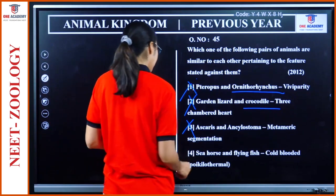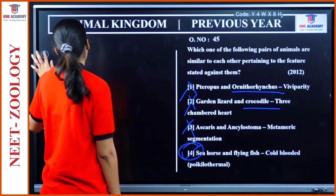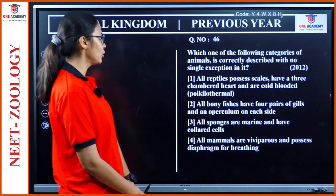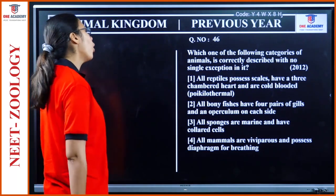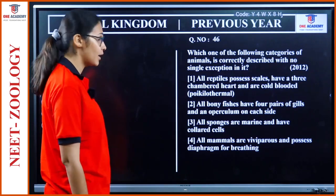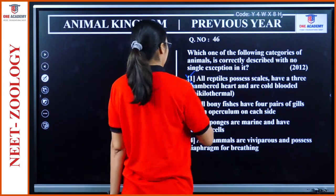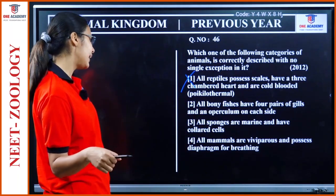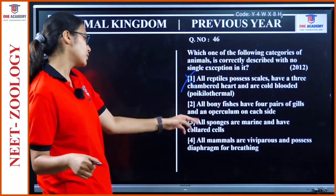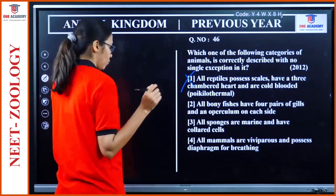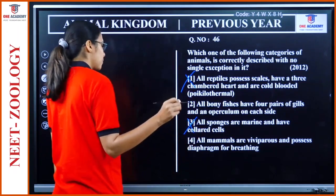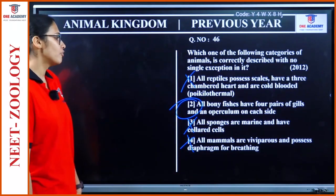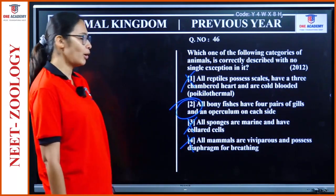Question 46: 'Which category is correctly described with no single exception?' All reptiles possess scales with three-chambered heart — exception is crocodile. All bony fishes have four pairs of gills and an operculum on each side — yes, this has a high chance of being correct. All sponges are marine — no, mostly marine. All mammals are viviparous — some are oviparous. Option 2 — all bony fishes have four pairs of gills and an operculum — is the answer.